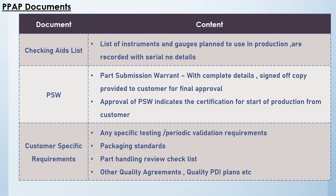The PSW, Part Submission Warrant, is the most important and basic document of PPAP. It contains complete details of the reason for submission, level of submission, run at rate, drawing, and all revision details. It is signed off between the supplier and customer's supplier quality engineer. This sign-off indicates that the part meets all specifications and the process is confident to give consistent results, and it serves as the approval to start mass production.